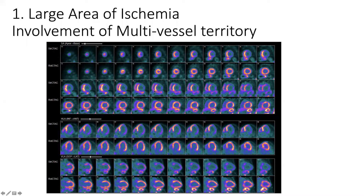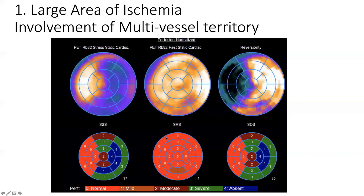One important sign is the presence of visualization of the right ventricle. This is an indirect sign of dysfunction of the left ventricle, and it is related to increased pulmonary pressure. This is a very important indirect sign and it is correlated with poor prognosis. You can see here the clear visualization of the right ventricle.